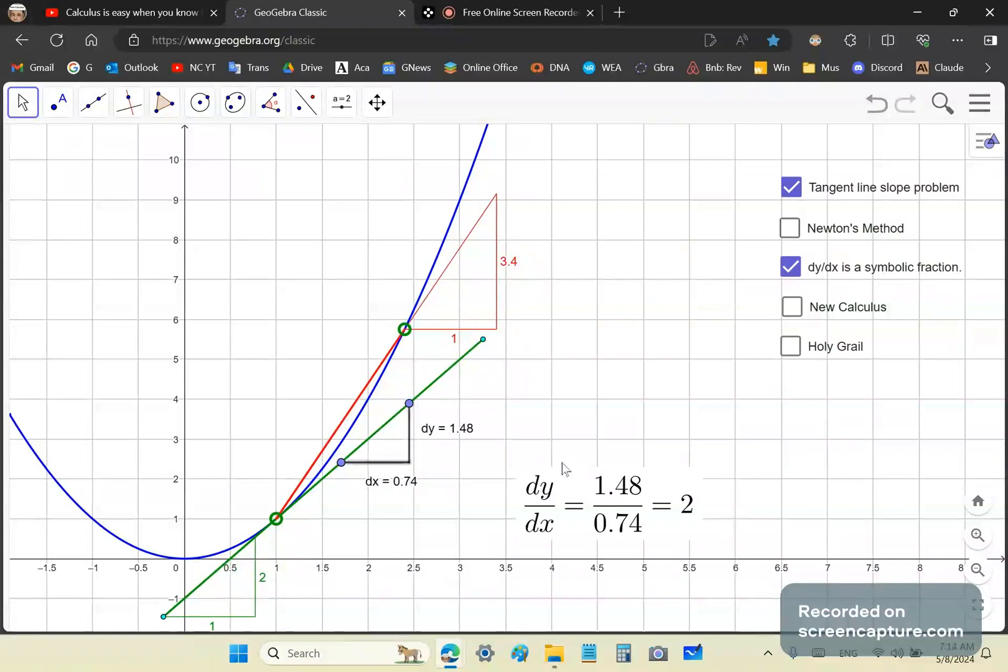You don't have the crap that Gilbert Strang and all the idiotic mainstream academics talk about when they say delta y over delta x goes to dy/dx as h goes to zero. That's all just garbage. You don't need it.